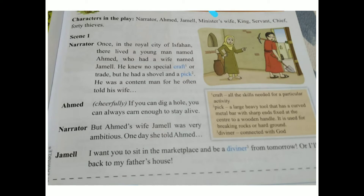They both lived happily but they belonged to a poor family, as Ahmed had only a shovel and a pick. A pick is a large heavy tool with a curved metal bar with short ends fixed at the centre of a wooden handle, used to break rocks or hard ground. He did hard work to earn a small amount to lead his life. But his wife Jamil was a very ambitious lady — she did not want to lead a poor life. Diviner means someone connected with God who tells what will happen in the future.